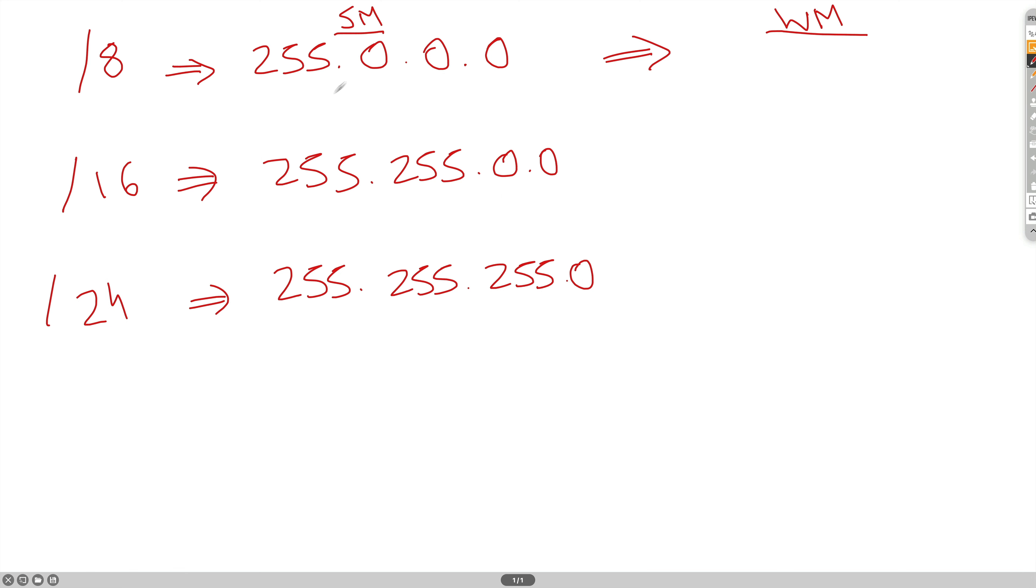Mirror opposite would mean we'll go from slash 8 being 255.0.0.0 to 0.255.255.255. So it's literally the opposite. In this case for slash 16, it's 0.0.255.255. And in the case of slash 24, it's 0.0.0.255. Like I said, this is the mirror opposite of the subnet mask, the wildcard mask.